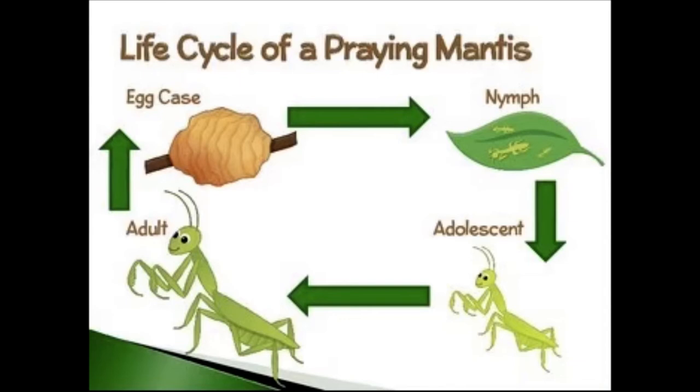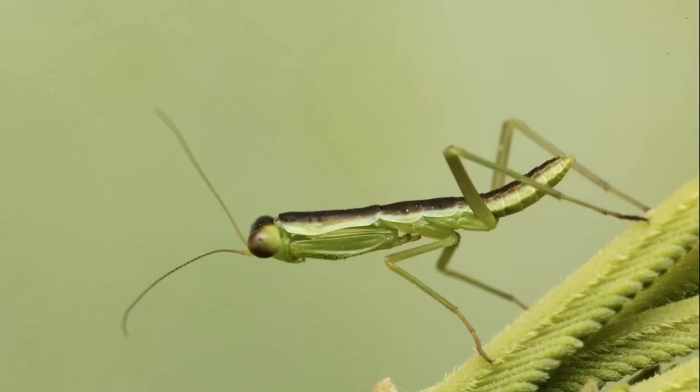Let's take a close look at one of these nymphs. Can you tell at this stage that it is an insect? Can you find its head? How many legs are on its thorax? Can you see how many pairs of wings it has? Is there a third section as well? What's that called? What is the outside skeleton of an insect called? Right — an exoskeleton. The baby insect, or nymph, is born with an exoskeleton.